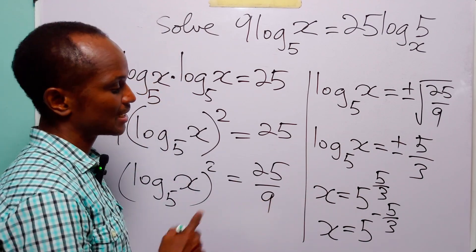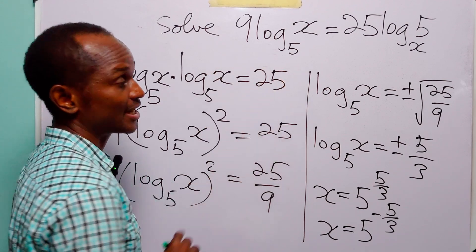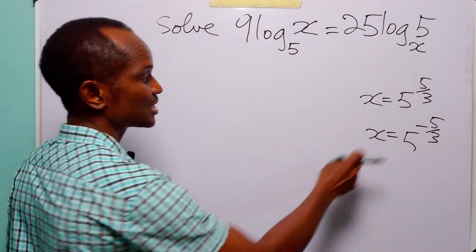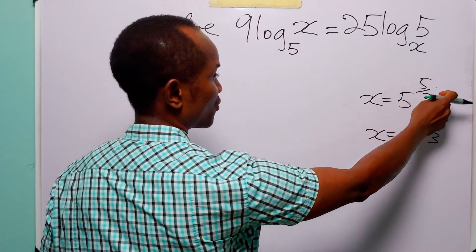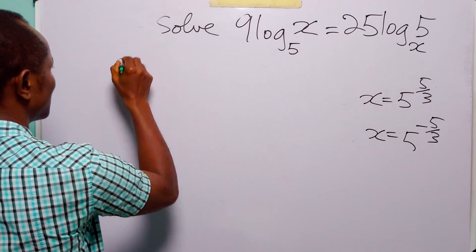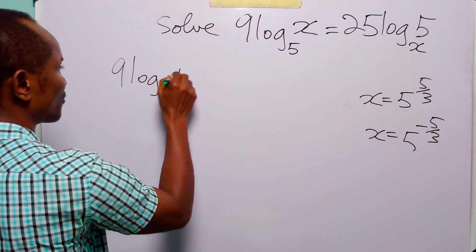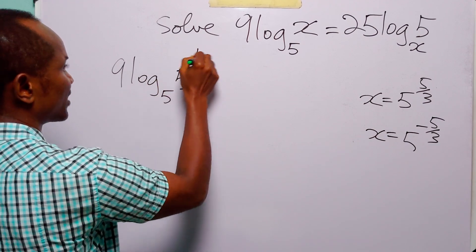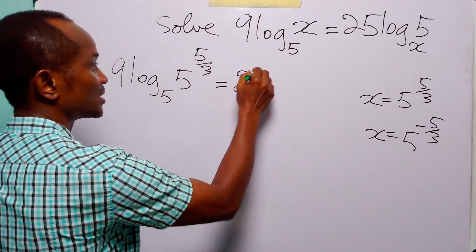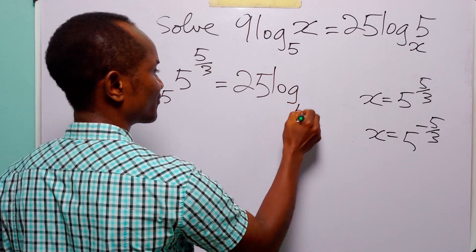Now let us check whether the values of x we calculated satisfy the original equation. If we substitute x = 5^(5/3) into the equation, we have: 9 × log base 5 of 5^(5/3) = 25 × log base (5^(5/3)) of 5.